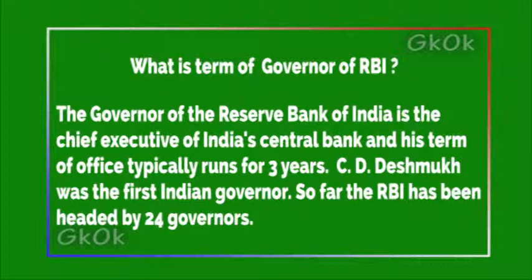What is the term of the Governor of the RBI? The Governor of the Reserve Bank of India is the chief executive of India's central bank, and the term of office typically runs for three years. C. D. Deshmukh was the first Indian governor. So far, the RBI has been headed by 24 governors.